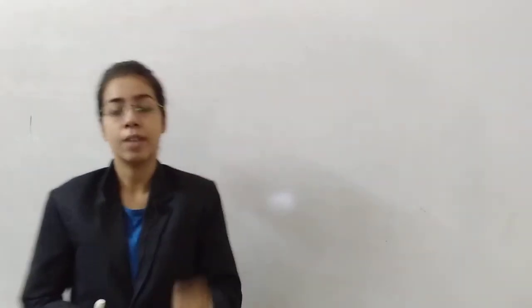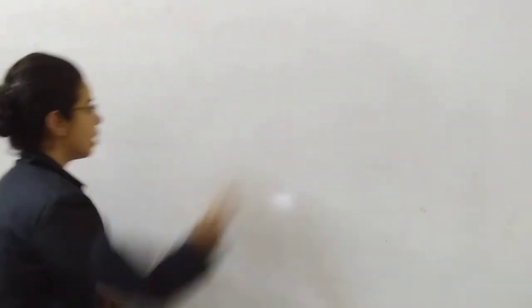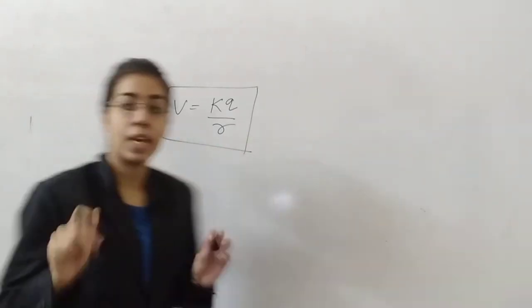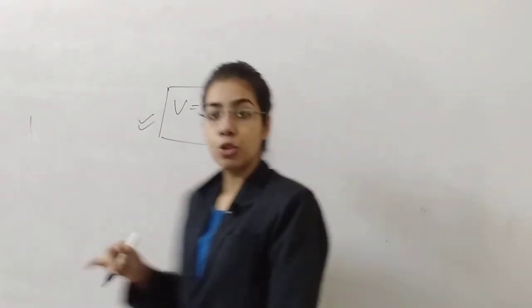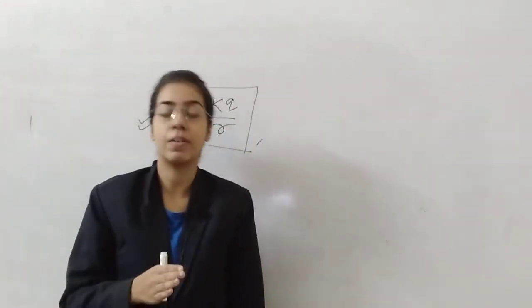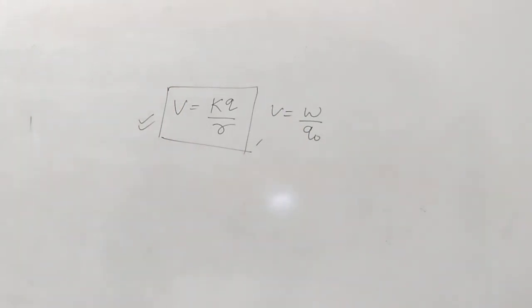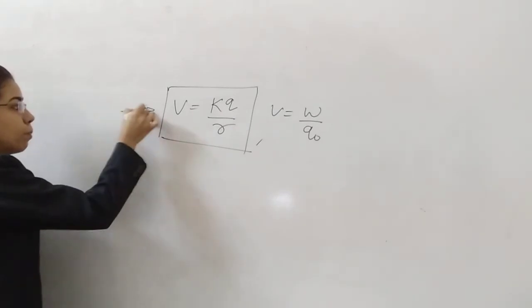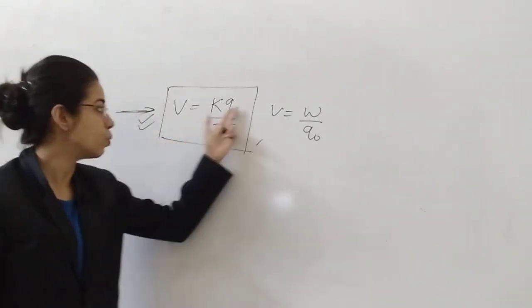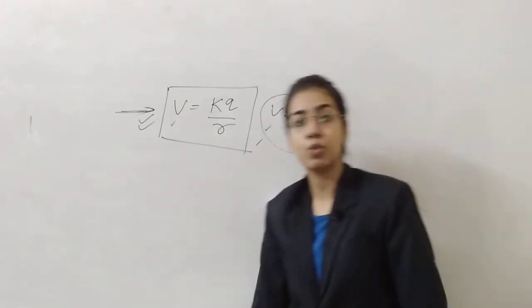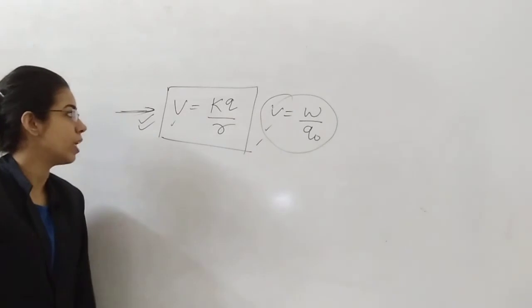In the last previous lecture, we studied Potential due to an electric field and Potential due to a point charge. The formula derived for potential due to a point charge is V equals to KQ upon R. We should learn this formula because it will be used in today's derivation. We have two formulas for V: first, V equals to W upon Q₀, and second, V equals to KQ upon R.